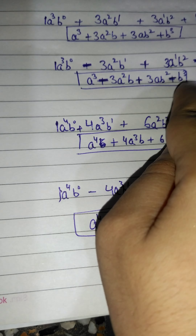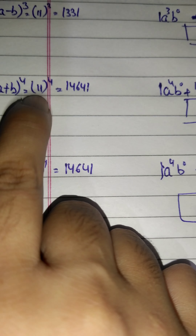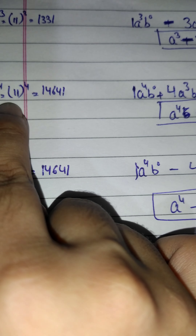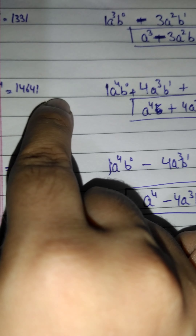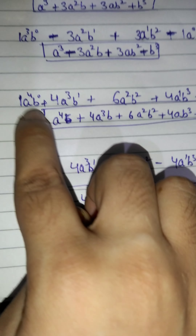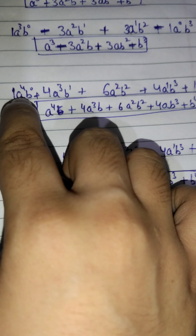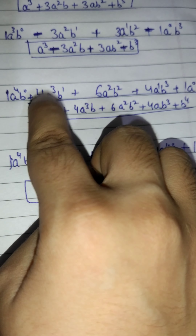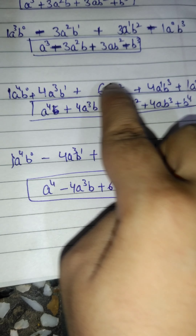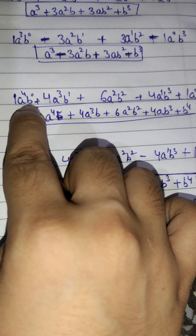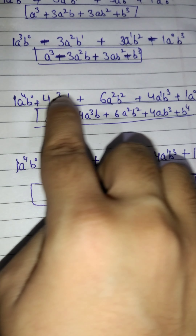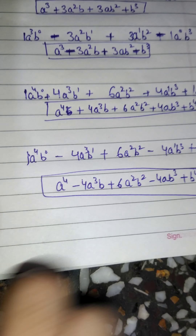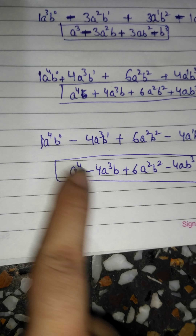Now for (a+b)⁴, we compute 11⁴ = 14641, giving coefficients 1, 4, 6, 4, 1. We write a from highest power: a⁴, a³, a², a¹, a⁰, and b increases: b⁰, b¹, b², b³, b⁴. Since the sign is positive, all terms are positive, and we expand the identity accordingly.